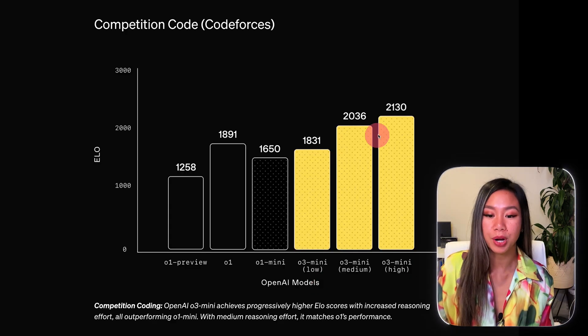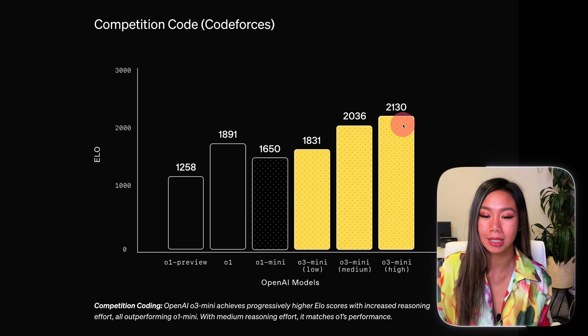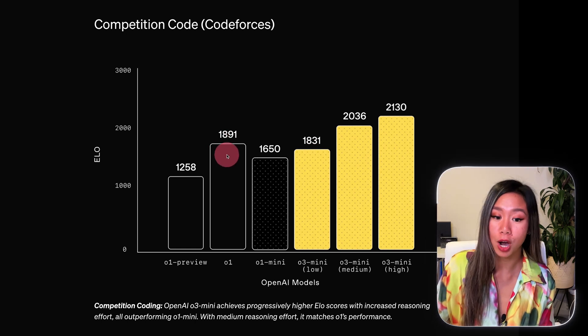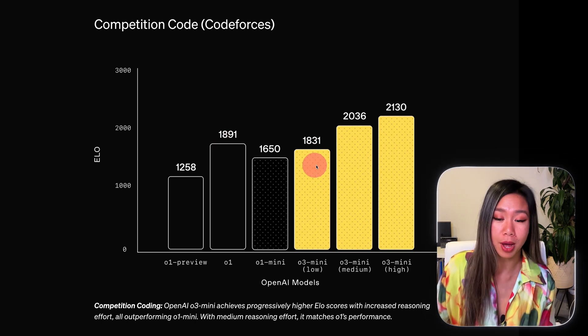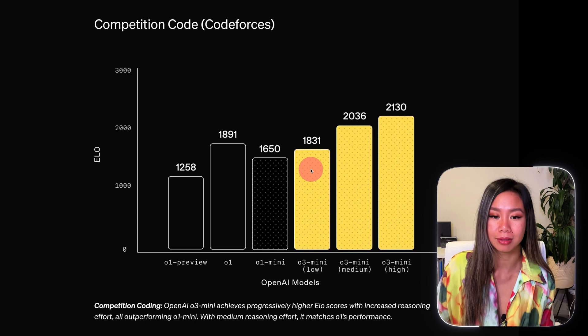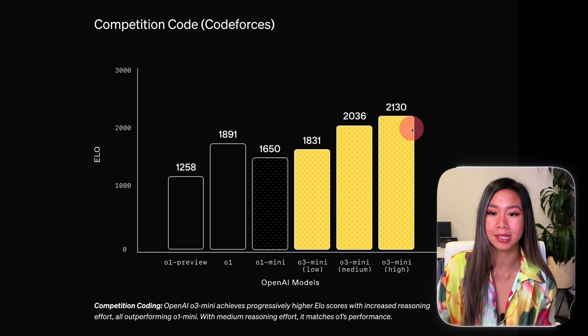On the coding benchmark, O3 mini is just getting better and better, with its lowest model performing on par with the O1 full model. So OpenAI has really cracked it out. Honestly, who needs to hire any software engineers anymore?